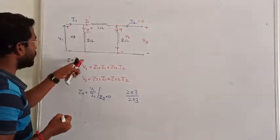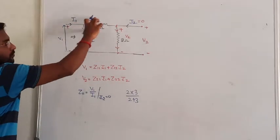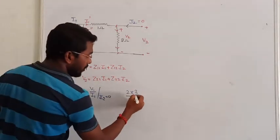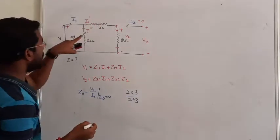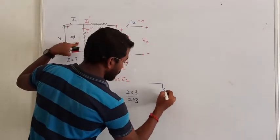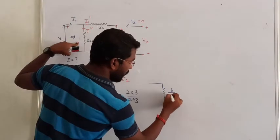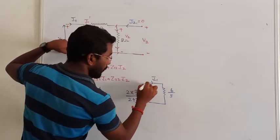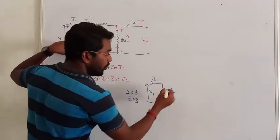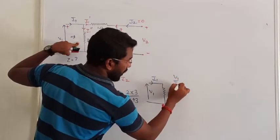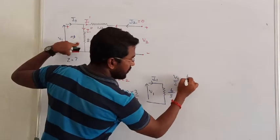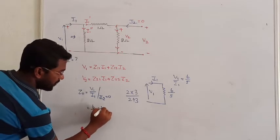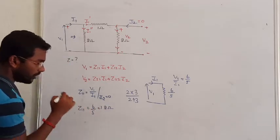In the branch of parallel, getting the total resistance from here. If you observe the total R equivalent, that becomes 2 into 3 divided by 2 plus 3. So R equivalent is 2 into 3, 6 by 5, or 1.2. Depending on the applied voltage V1 and current I1, we can say V1 by I1 equal to 6 by 5 ohm. So we found the value of Z11, that is 1.2 ohm.